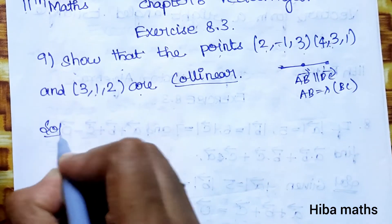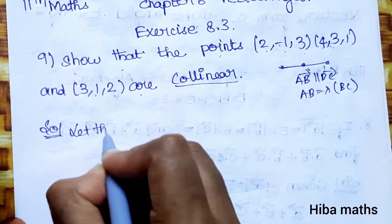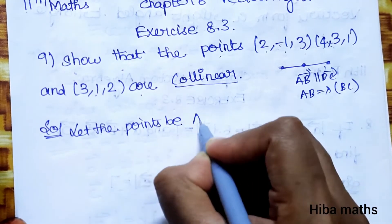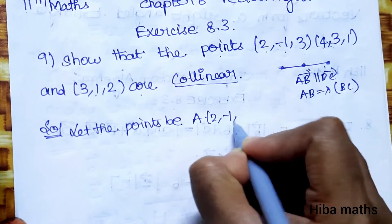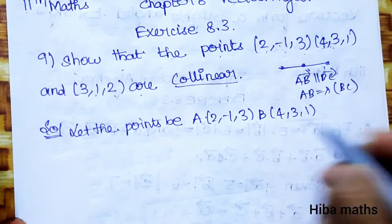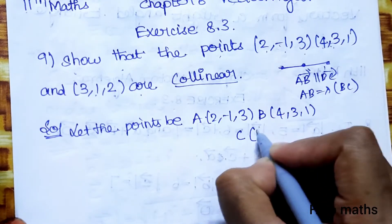Solution: Let the points be A(2, -1, 3), B(4, 3, 1), and C(3, 1, 2).